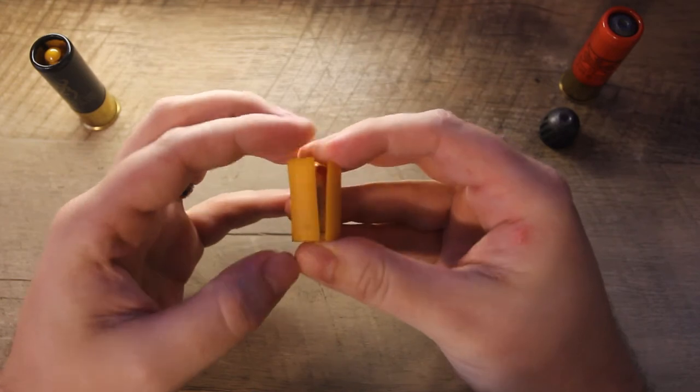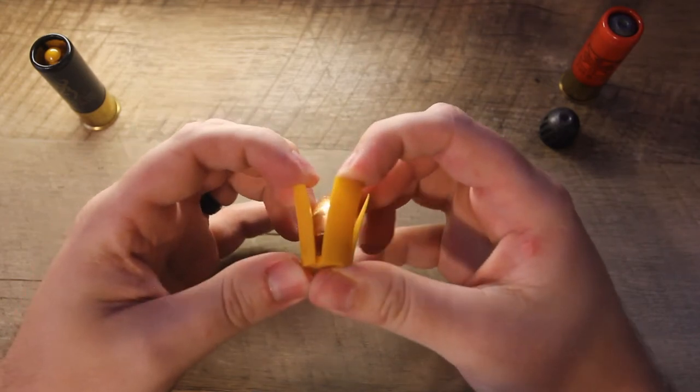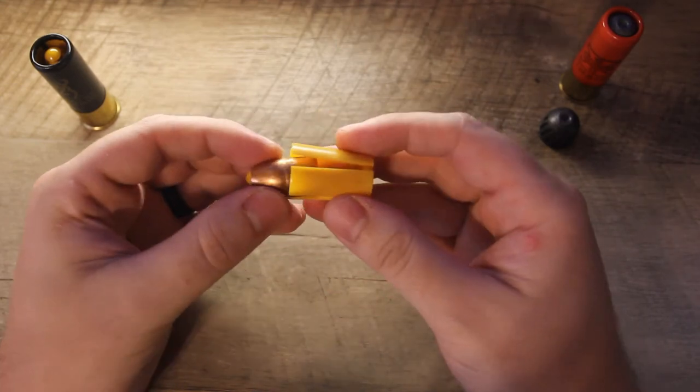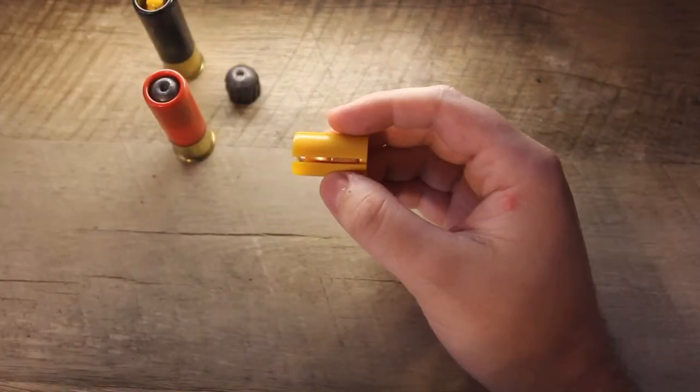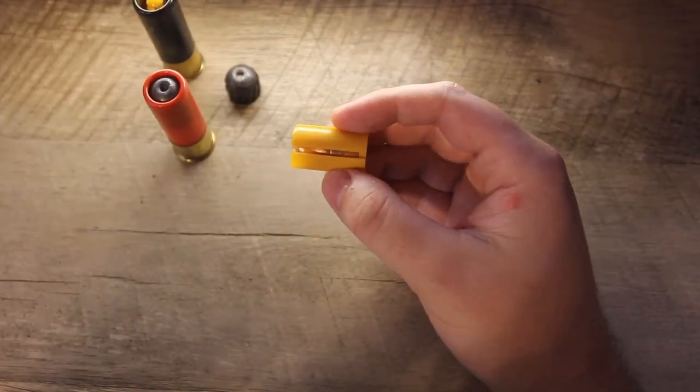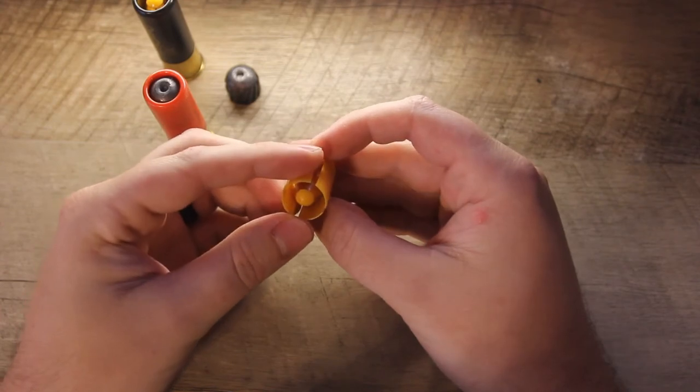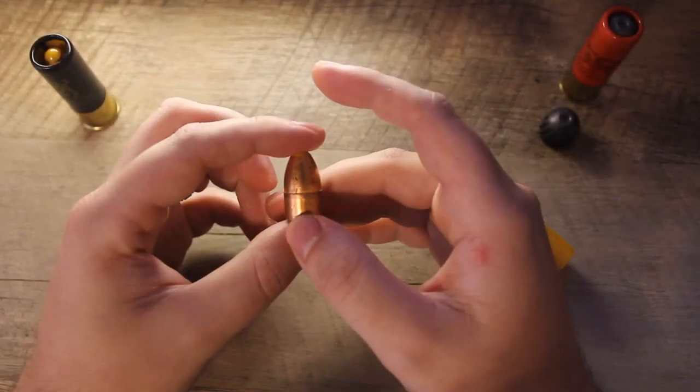When the slug leaves the muzzle, this plastic sleeve will slow down and detach itself from the main projectile, and the main projectile will continue moving forward. It's going to continue that spinning rotation that was essentially imparted on this slug by the barrel.